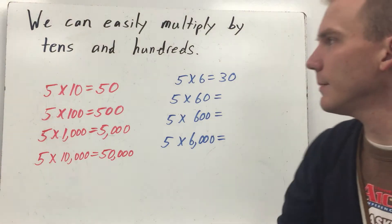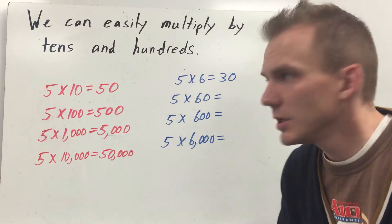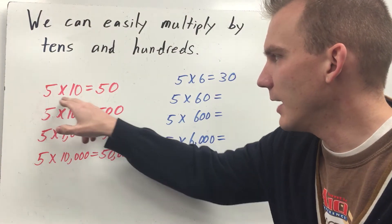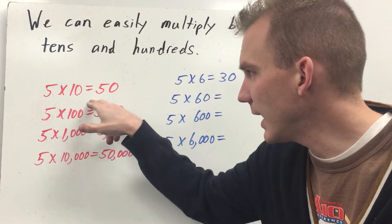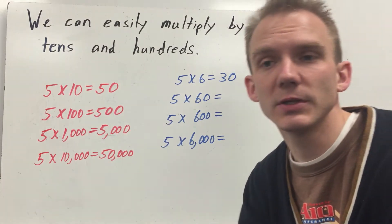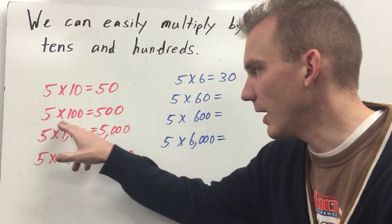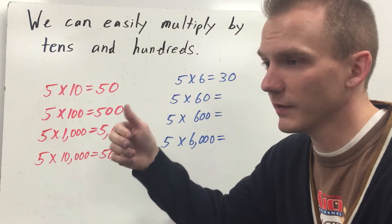We can easily multiply by tens and hundreds as well. So you have five times ten is 50. Well, really what you need to know is five times one is five. And then you can put the zeros. There's a distinct pattern here. Five times one hundred is five hundred.